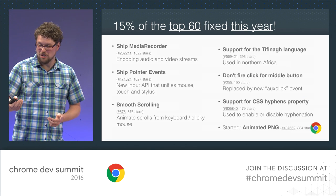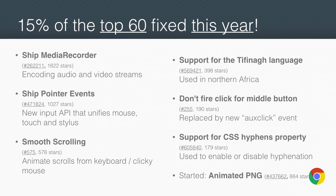I'm particularly proud that if we look at the top 60 starred bugs of all time in Chromium for web platform bugs, we've fixed 9 of them in the past year. There are two on this list with three-digit bug numbers — those bugs were filed the day the Chromium project opened in 2008. So we're a little slow getting to them, sorry, but we're on top of it now.